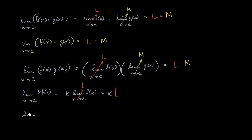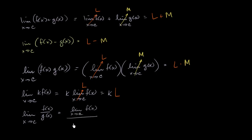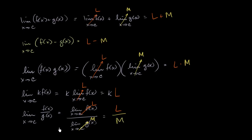If we have the limit as x approaches c of f of x divided by g of x, this is the exact same thing as the limit of f of x as x approaches c divided by the limit of g of x as x approaches c, which equals L over M. This is sometimes called the quotient property.